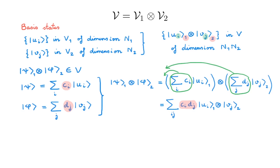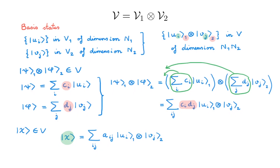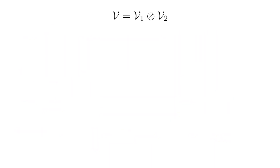Although this result is important, quantum mechanics is much more interesting than this. Consider another ket |χ⟩ in V. We can always write |χ⟩ as a sum over i, j of expansion coefficients aᵢⱼ and the basis states of V, given by the tensor product of basis states in V1 and V2. Now let's ask: can we always write |χ⟩ as being built from two states originally specified in V1 and V2? To do that, we should be able to write aᵢⱼ as equal to cᵢ times dⱼ. But is this always possible?